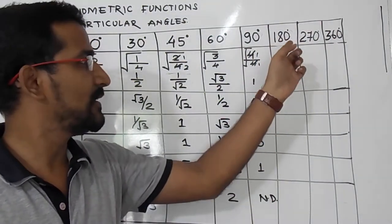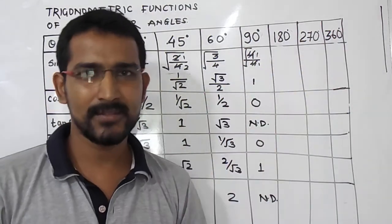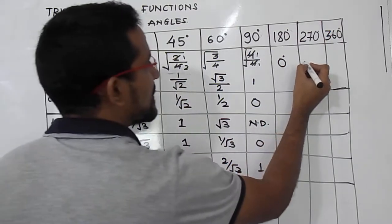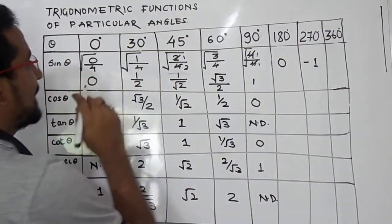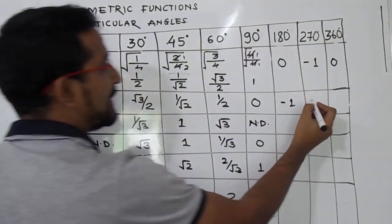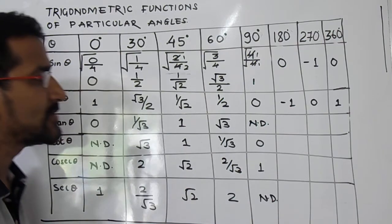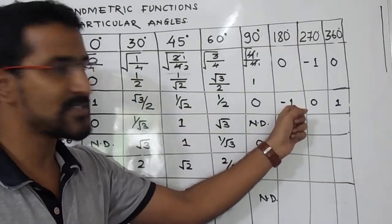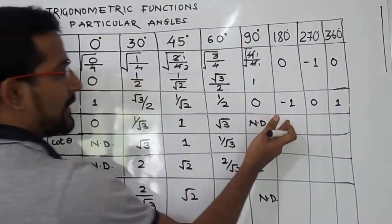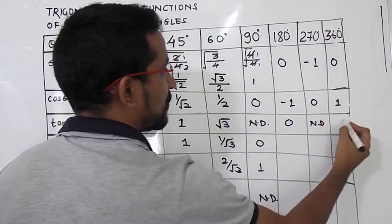Now the quadrantal angles — 180°, 270°, and 360°. We have already seen 90°. These higher values are used in college-level work. Sin 180° = 0, sin 270° = −1, and sin 360° = 0. Cos 180° = −1, and cos 360° = 1. For tan θ = sin θ / cos θ: tan 180° = 0, tan 270° is not defined (−1/0), and tan 360° = 0.